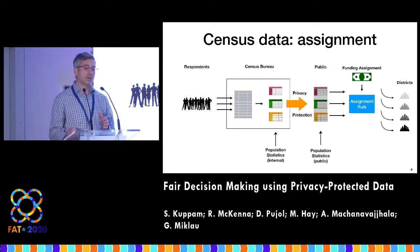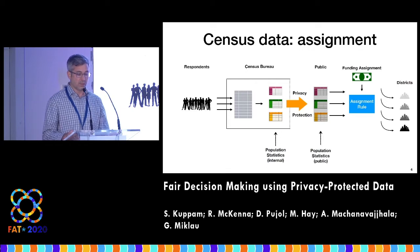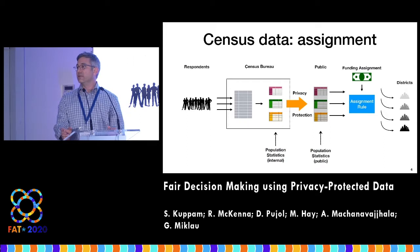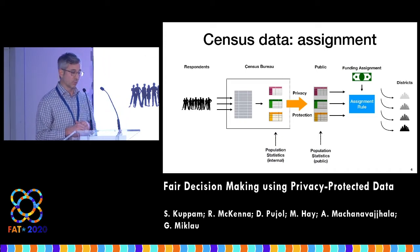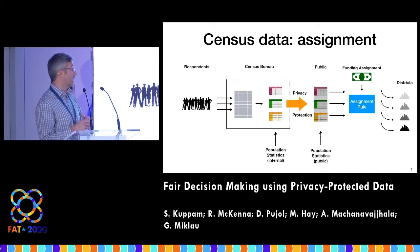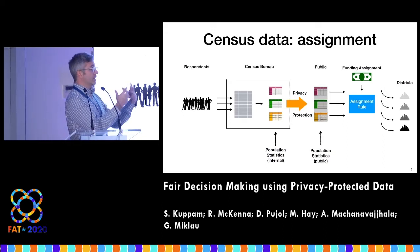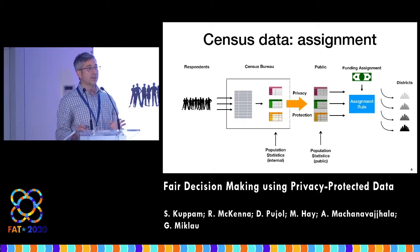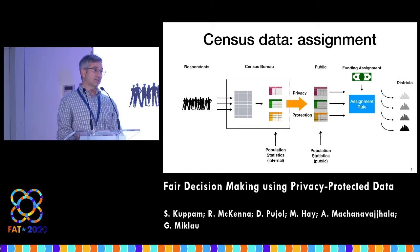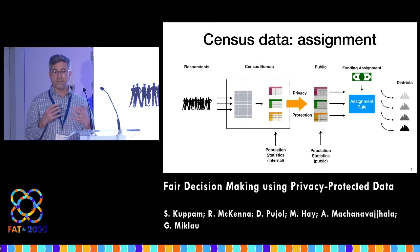The focus of our work is on downstream impacts of that inaccuracy — in particular, a class of problems we call assignment problems, where some resource or benefit is granted to a group and the statistics are an input to that decision. The assignment rule needs the statistics to make the allocation. Funding allocation is one prime example: a pot of money is distributed proportionally to geographic or school districts, and any distortion in population counts is going to affect funding.